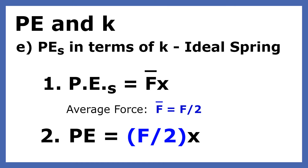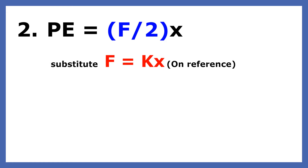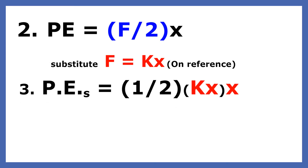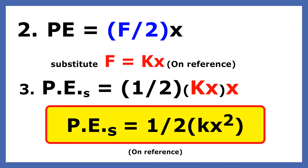The average force to stretch a spring is the final force divided by 2. The force on a spring equals the spring constant times deformation, which is x. When we substitute kx for f into the PE equation, we see that PE equals 1 half kx squared. The equation shows that the potential energy of a spring has a direct square relationship with stretch.